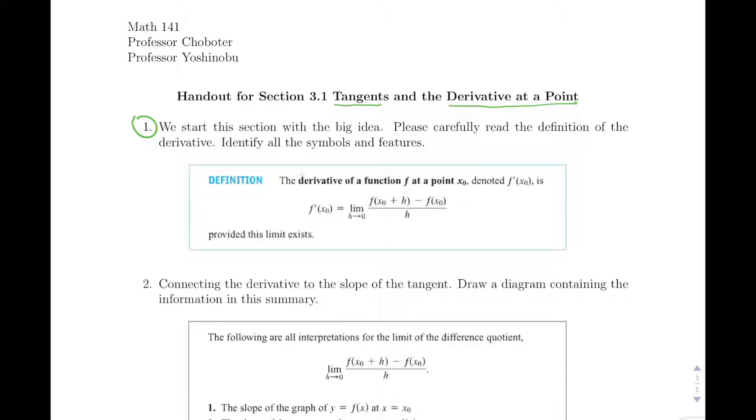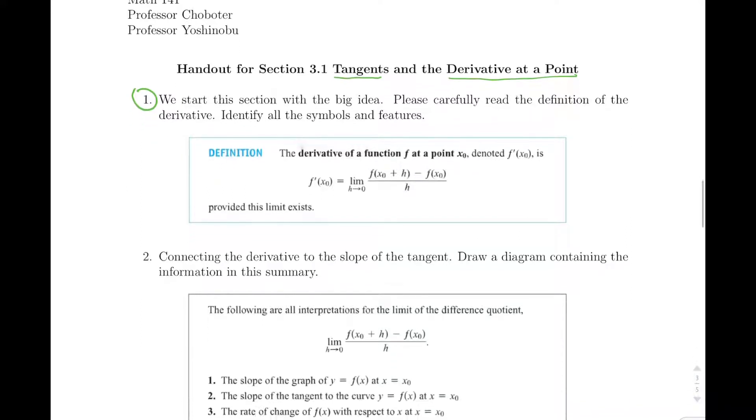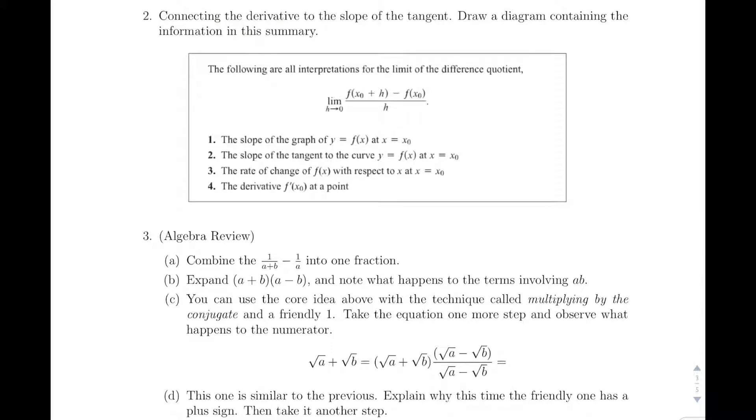Let's take a look at number two. Number two, what we're going to do is add meaning to the limit definition that's already been hinted at in earlier sections of the book. So here we're connecting the derivative to the slope of the tangent, and the textbook presents these four connected ideas: the slope of the graph, the slope of the tangent to the curve, the rate of change of f(x), and the derivative f'(x) at a point.